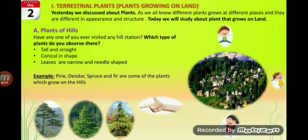Students, plants growing at different places are different in appearance and structure. Let us find out how plants found at different places differ from one another. First, plants of hills. Have you ever visited any hill station? Which type of plants do you observe there? Those plants are tall and straight, their leaves are narrow and needle shaped. These tall, straight and green conical trees make hills appear green and beautiful.